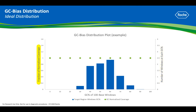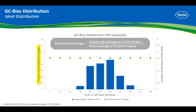The primary y-axis on the left represents the fraction of normalized coverage per window, shown by the green dots. We calculate normalized coverage by looking at a single GC percent window's sequencing coverage and dividing by the mean coverage of all the windows. This would be an ideal distribution of coverage because all the points are 1, indicating that all regions are equally covered.